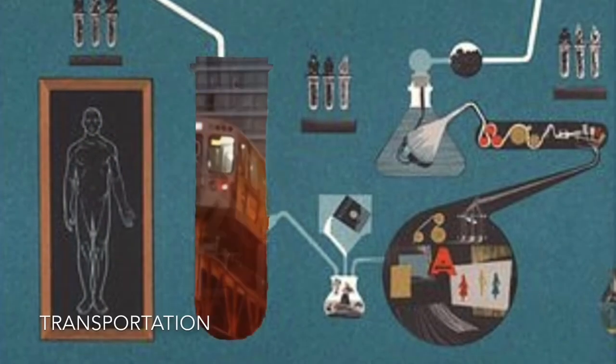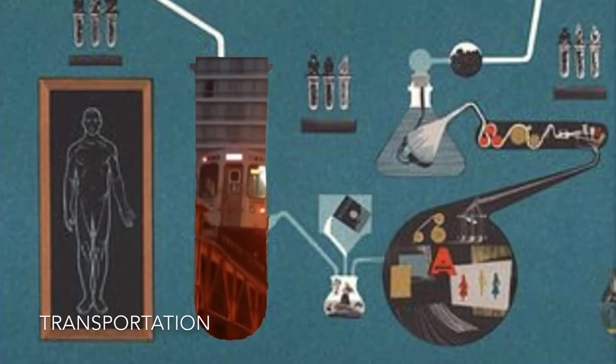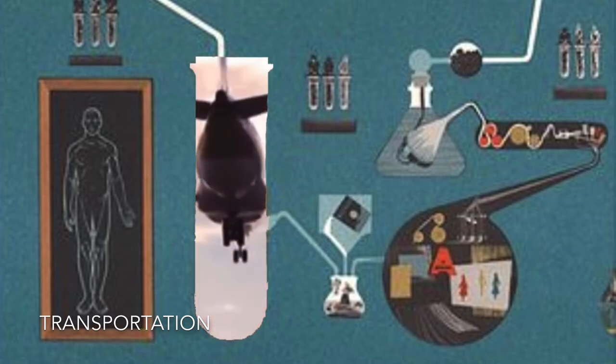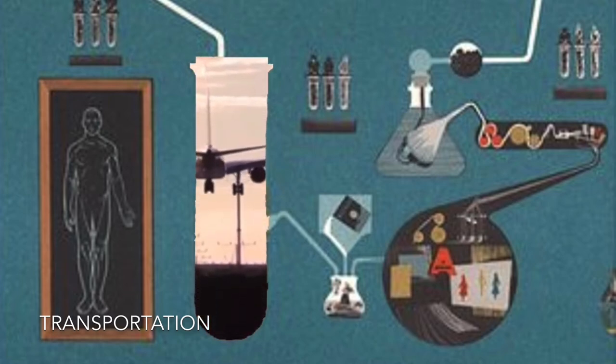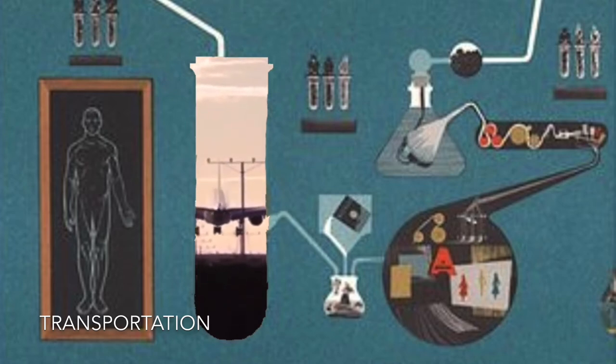Atomic submarines, jets, rockets, and missiles usher in a fantastic era of travel made possible through chemistry. More conventional ways to travel from the superhighways to high-octane gas also owe their existence to chemistry.